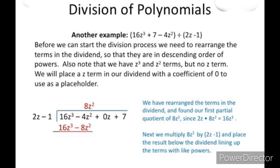Same, another example of division of polynomials. What we have to do? First, we have to rearrange the terms in the dividend and found out first partial quotient, that is of 8z². You can see here in the example, 16z³ minus 4z² plus z, that is 0z plus 7, is divided by 2z minus 1.